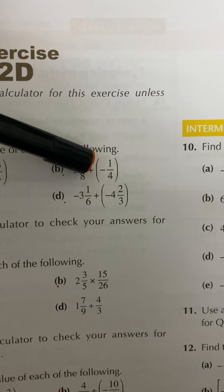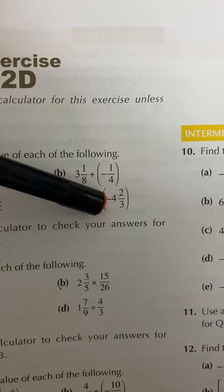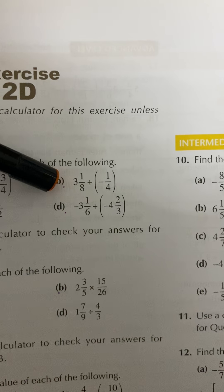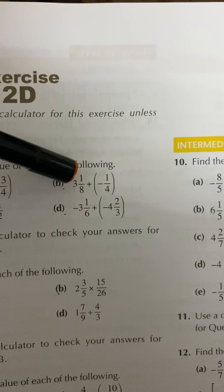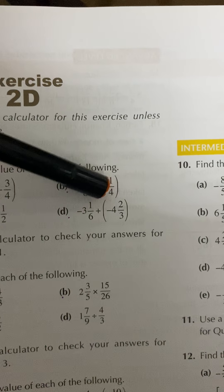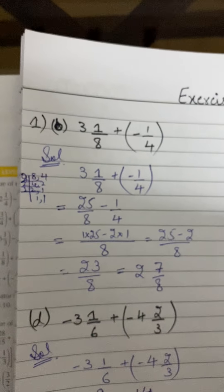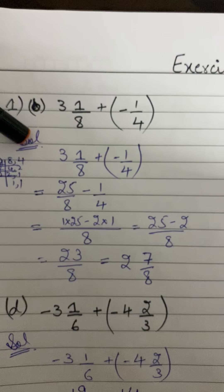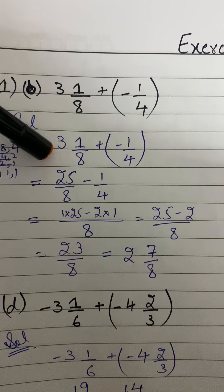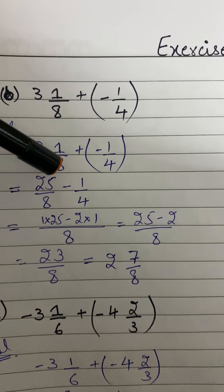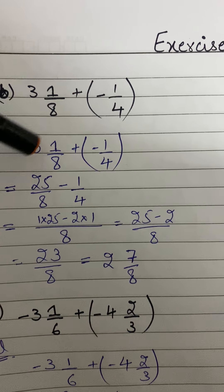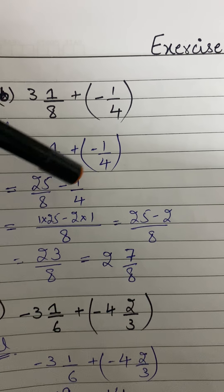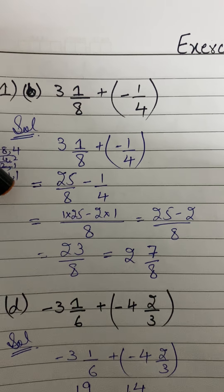Come to part b: we have 3 whole 1 over 8 plus bracket minus 1 over 4. We have a mixed number, so first we will change this mixed number into an improper fraction. Then we subtract, because plus times minus gives minus. 8 threes are 24, plus 1 is 25, so it becomes 25 over 8, plus minus 1 over 4.